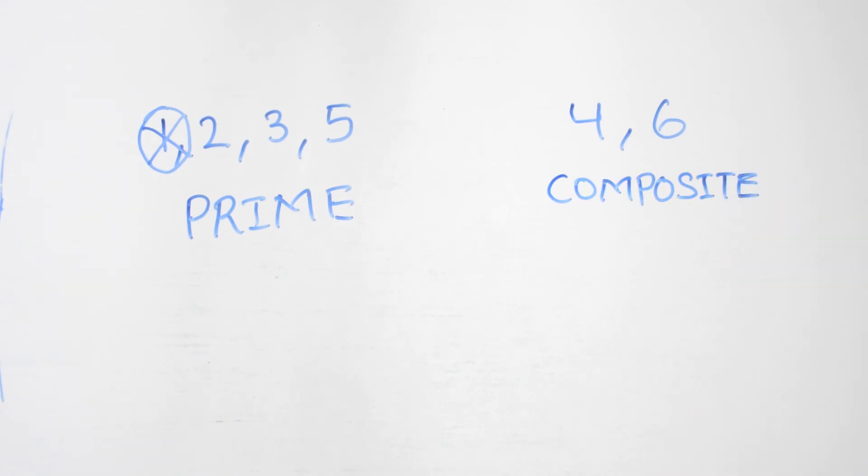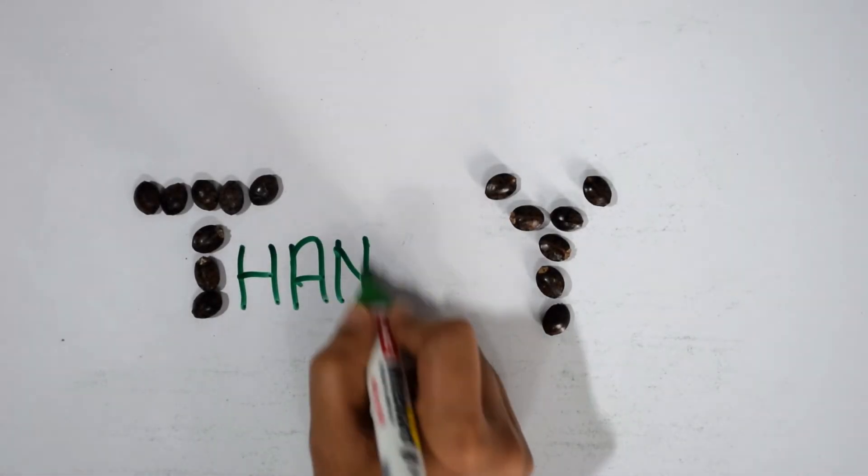We hope you understood how to find prime and composite numbers just by arranging seeds. Now in the same way, can you find among 7 and 8 which is prime and which is composite? Thank you for watching. Do try this on your own.